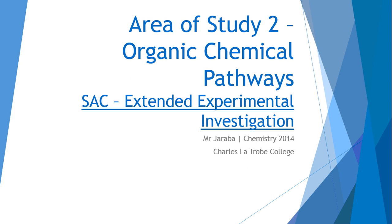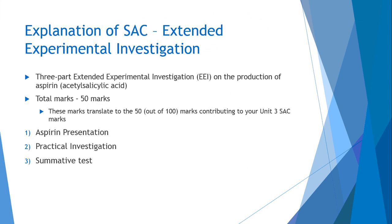We're going to be commencing this as soon as we get back at the start of Term 2. It is a three-part Extended Experimental Investigation, called EEI, all about the production of aspirin — acetyl salicylic acid. It's worth 50 marks, and these 50 marks are also the marks submitted for your study score calculations. It's worth 50% of your Unit 3 study score mark, and approximately 10% of your total study score mark — so it's a big one, but we've broken it up to hopefully help you succeed and achieve in this SAC.